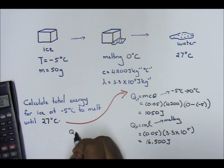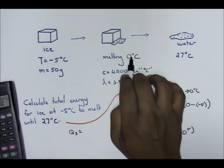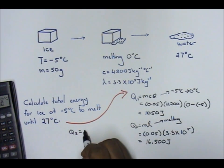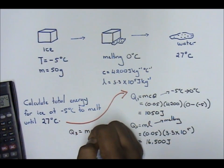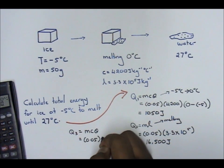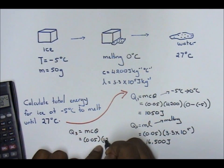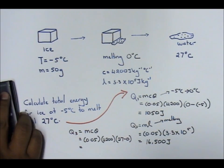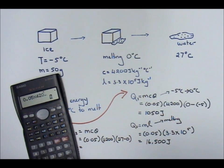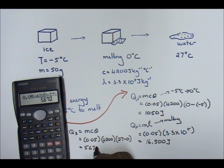Your Q3: from 0 degrees Celsius to 27 degrees Celsius. It's water to water, liquid to liquid. So M, C, theta. My M is 0.05, my C is 4200, and my theta is 27 minus 0. Times the whole thing: 0.05 times 4200 times 27, and you will have 5,670 Joules.